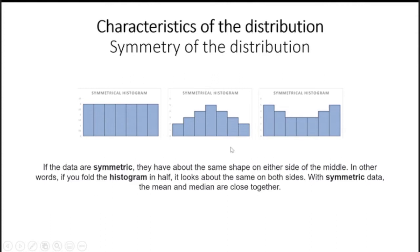For theoretical exam questions, you need to know about characteristics of distributions. First: symmetry. A symmetrical histogram means if you placed a mirror in the center, both sides would be identical. For symmetric data, the mean and median are close together — if perfectly symmetric, they are equal.